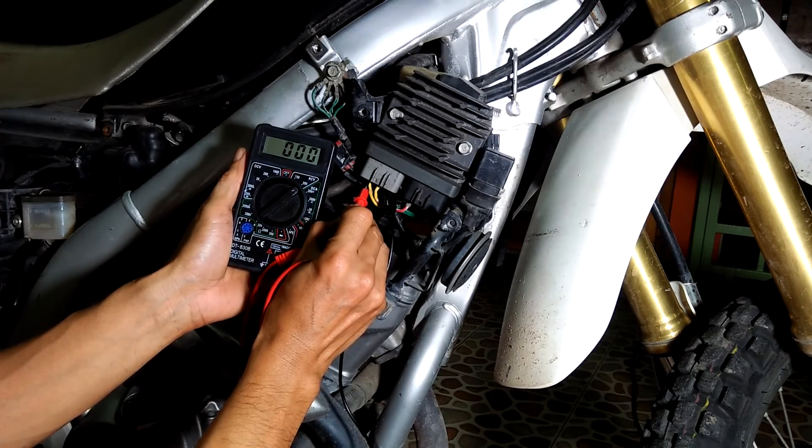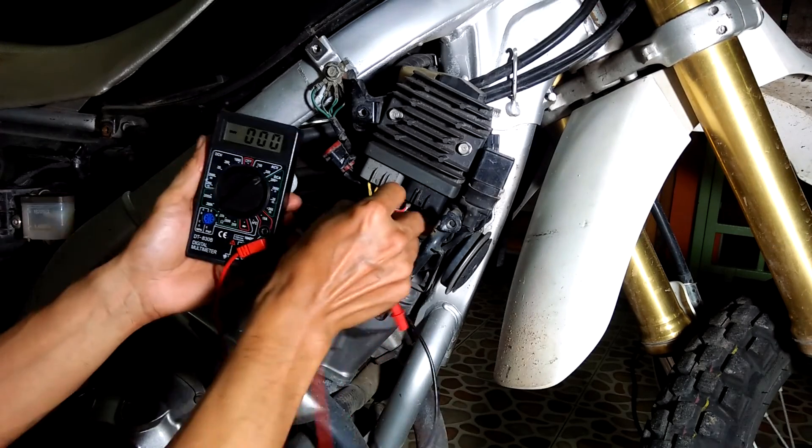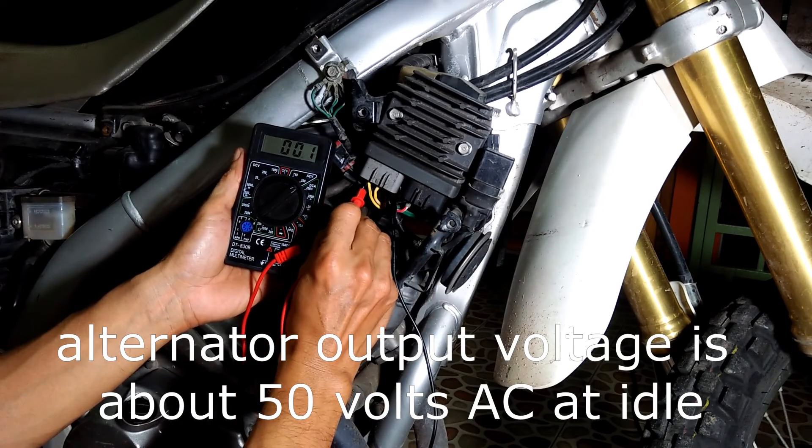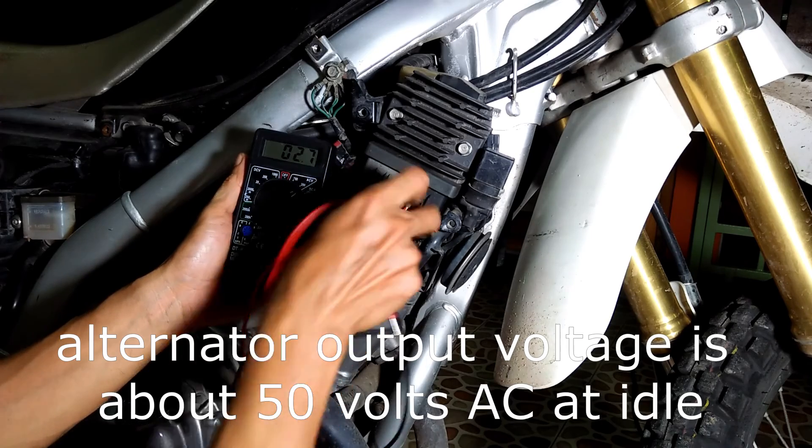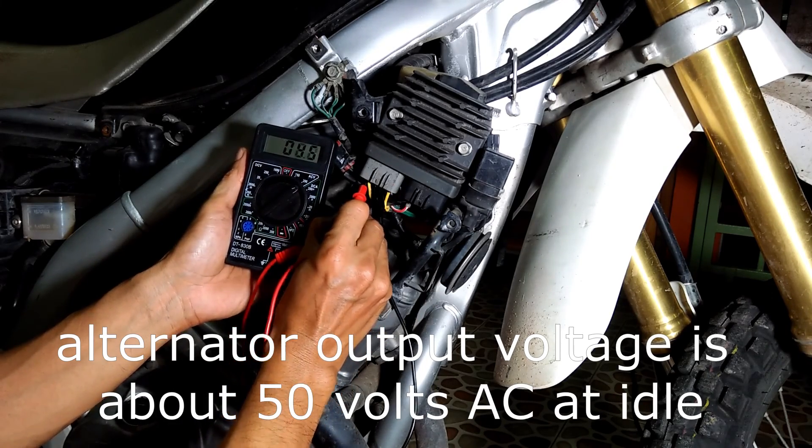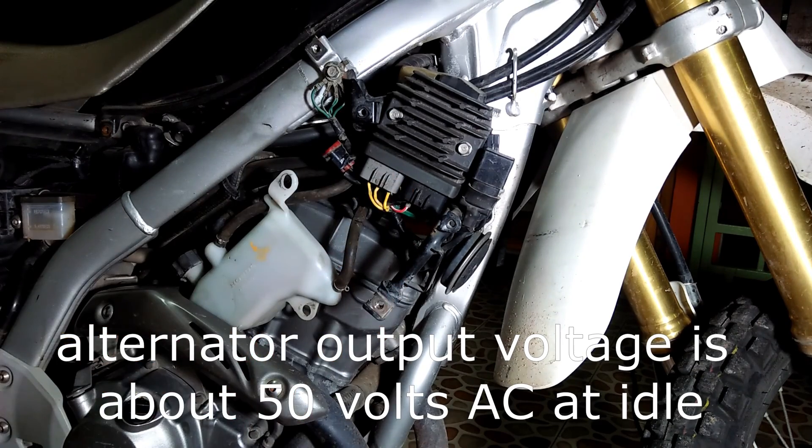After rewinding the stator, we are now getting about 50 volts AC from the alternator with the engine at idle. So my effort was a success. Thank you very much for watching this video and hope it helps.